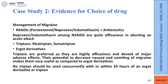The first line of treatment is non-steroidal anti-inflammatory drugs — paracetamol, naproxen or indomethacin with or without anti-emetics. Triptans and ergot derivatives can also be used. Triptans are highly effective, but triptans and ergot derivatives must not be used concurrently or within 24 hours of each other, so as to avoid the risk of ischemia.